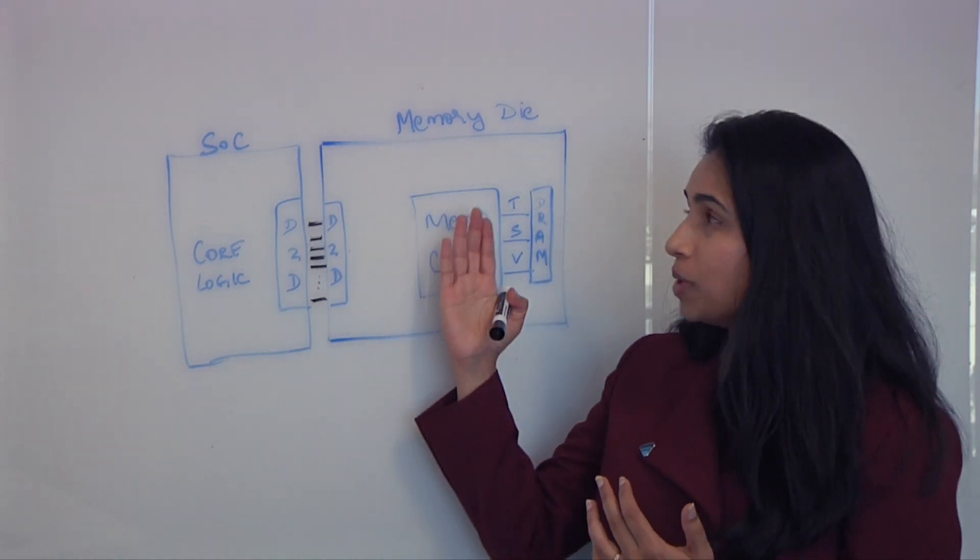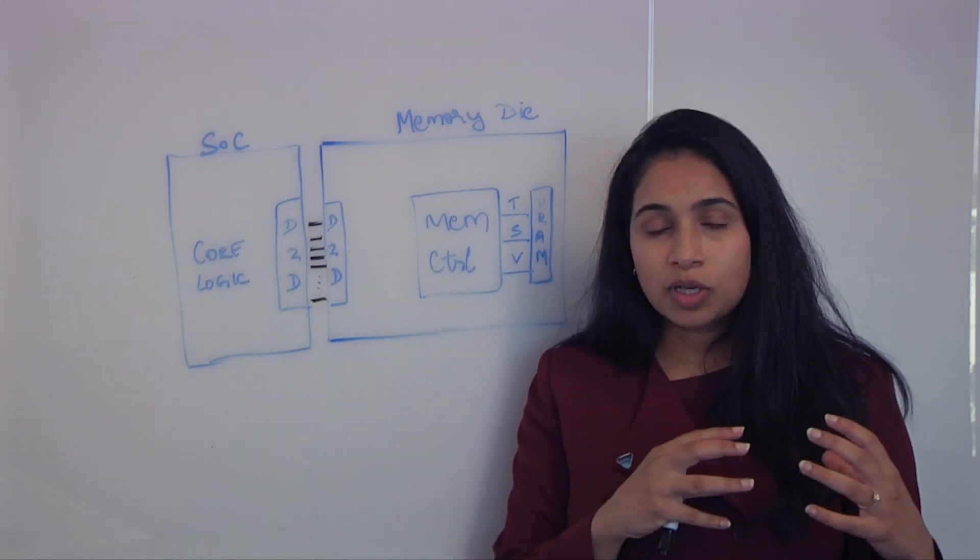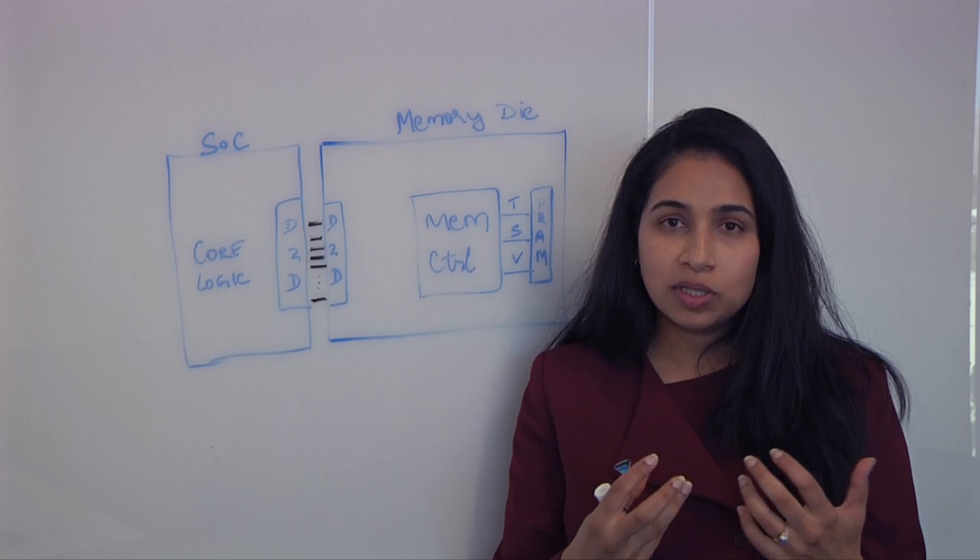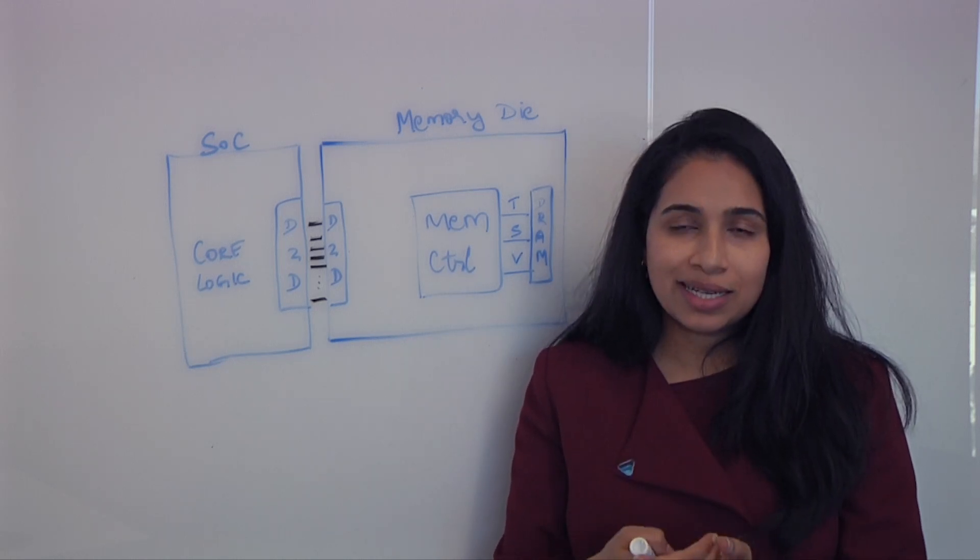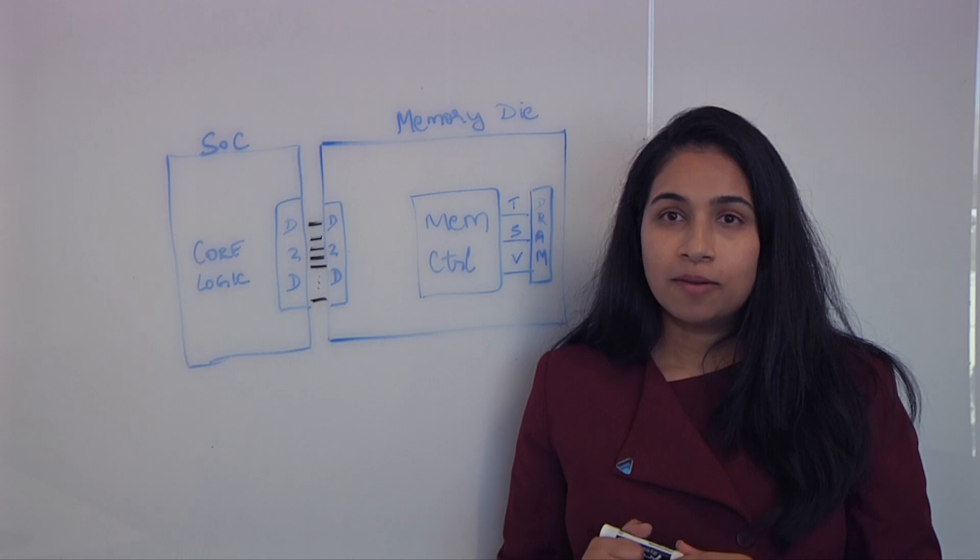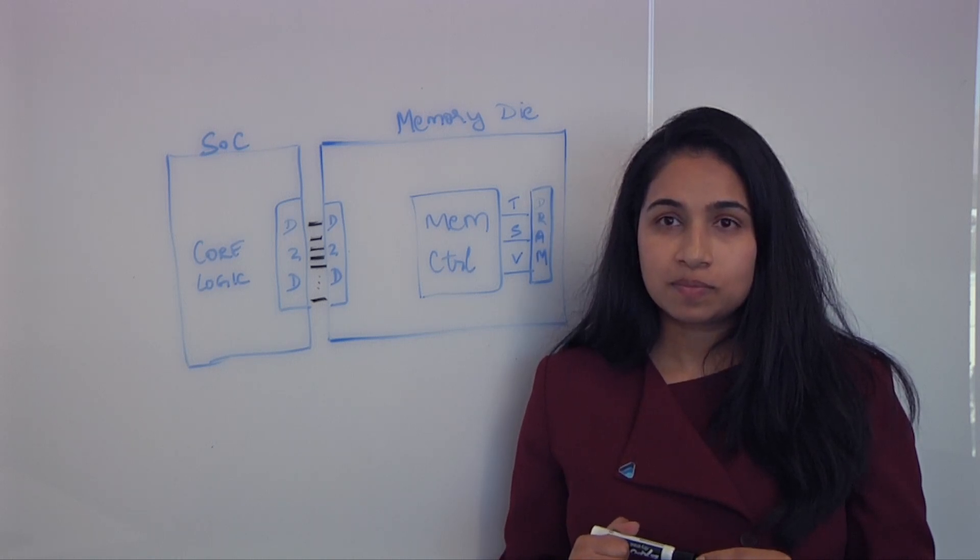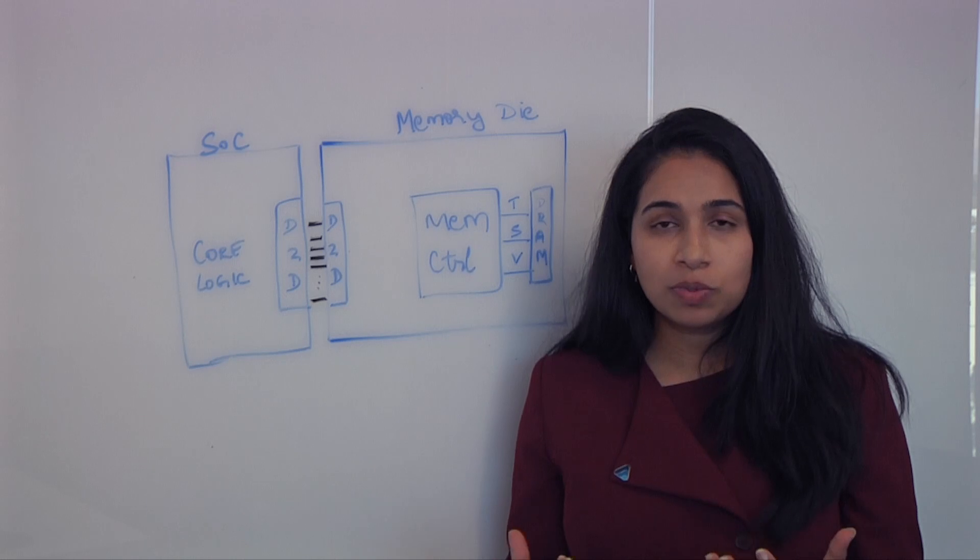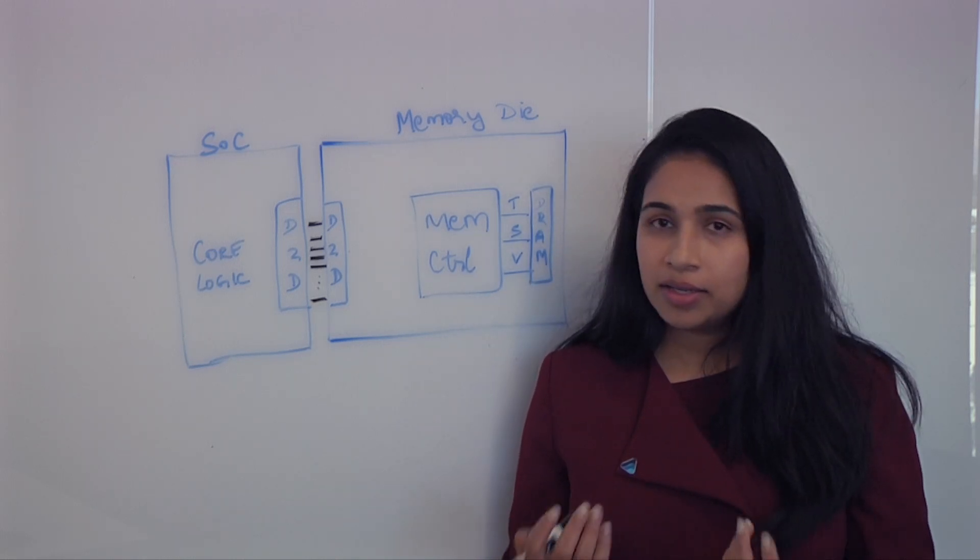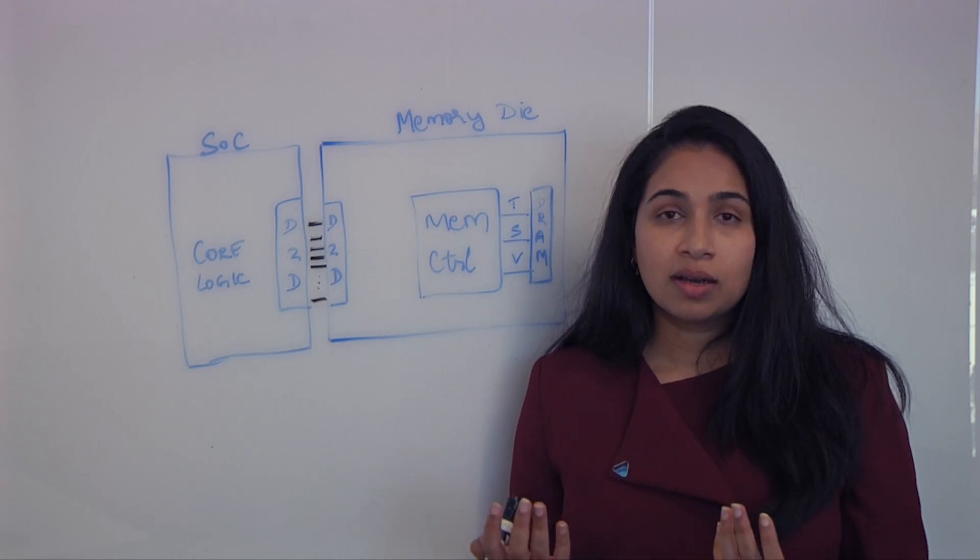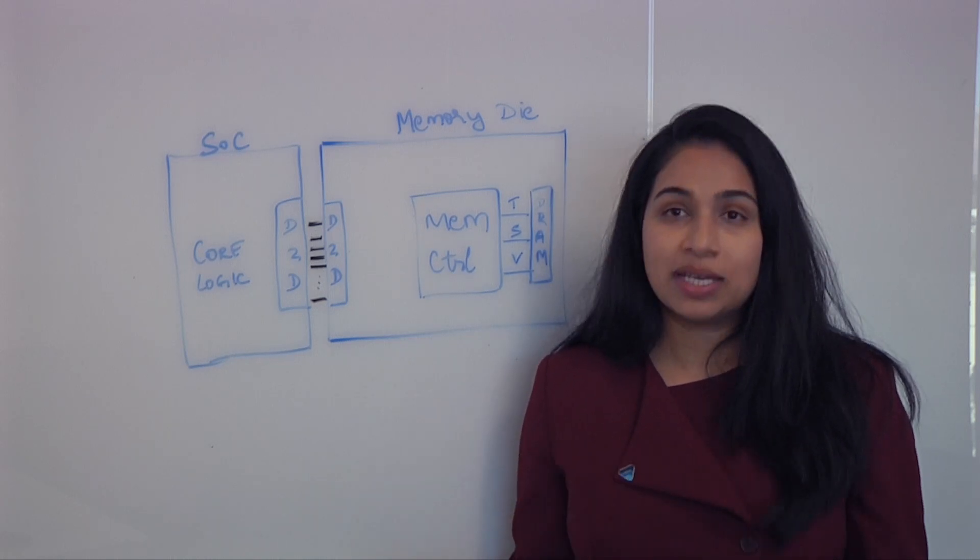Here at AlphaWave Semi, for example, if you're implementing a custom memory base die, you not only require an IP like a memory controller that can be highly configurable, you need to now closely work with a DRAM vendor to implement the whole custom base die. It takes an ecosystem to build one of these. Absolutely. In addition to that, you also need some sort of an ASIC capability like a custom silicon group, which implements custom ASIC dies.